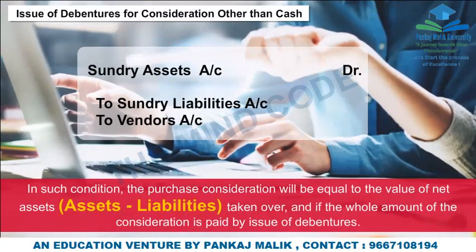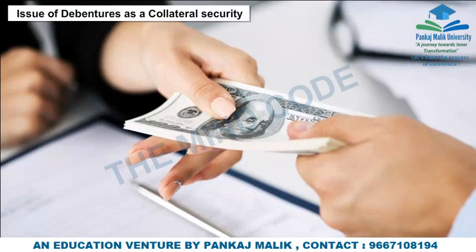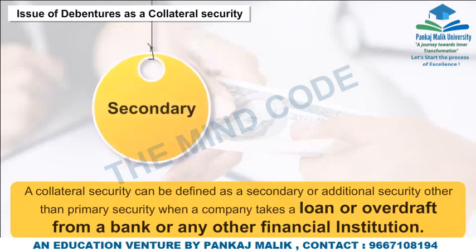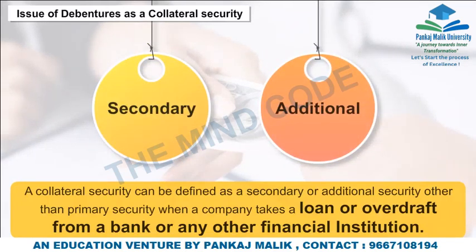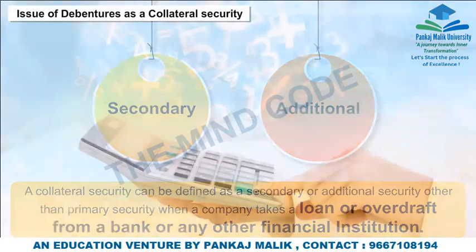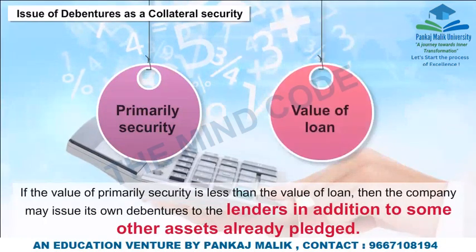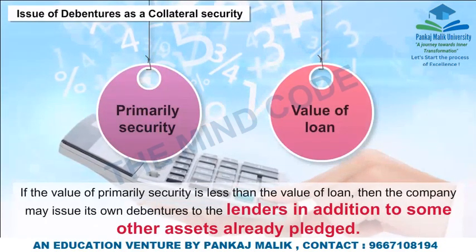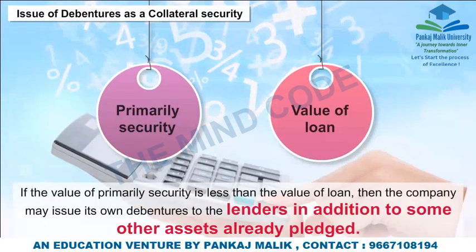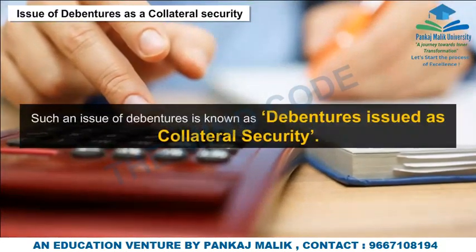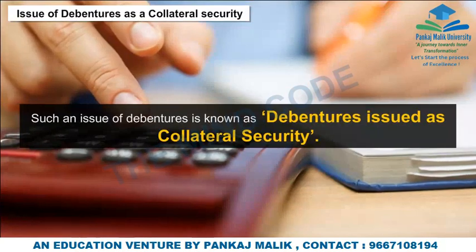Issue of Debentures as Collateral Security: A collateral security is a secondary or additional security, other than primary security, when a company takes a loan or overdraft from a bank or financial institution. If the value of the primary security is less than the value of the loan, the company may issue its own debentures to the lender in addition to other assets already pledged. Such an issue of debentures is known as debentures issued as collateral security.